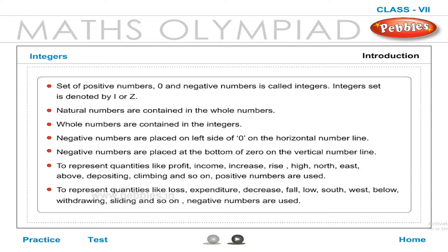To represent quantities like loss, expenditure, decrease, fall, low, south, west, below, withdrawing, sliding, and so on, negative numbers are used.